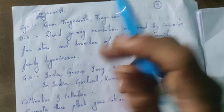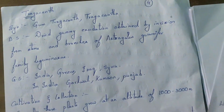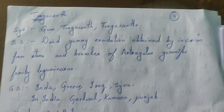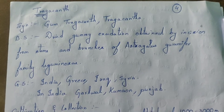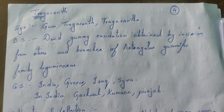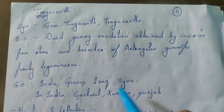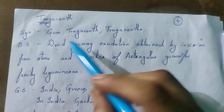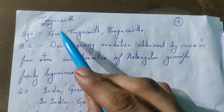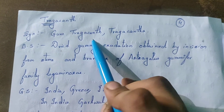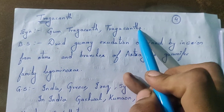Our next topic is Tragacanth. The synonyms of Tragacanth are Gum Tragacanth and Tragacantha.